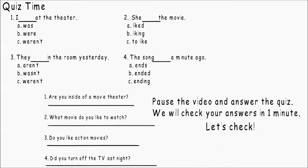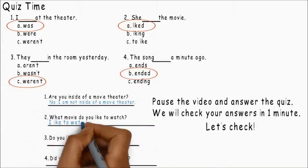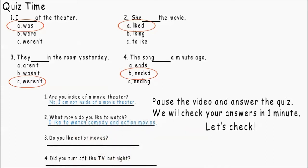Let's check. I was at the theater. She liked the movie. Maybe they weren't in the room yesterday. The song ended one minute ago. Are you inside of a movie theater? No, I'm not inside of a movie theater. What movie do you like to watch? I like to watch comedy and action movies. Do you like action movies? Yes, I do. I like action movies. Did you turn off the TV last night? No, I didn't. My mother turned off the TV.